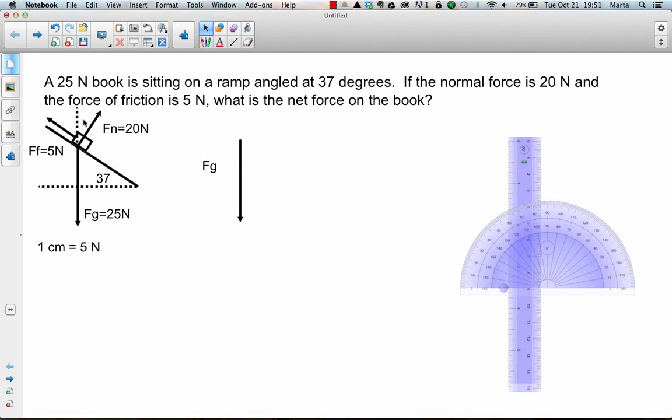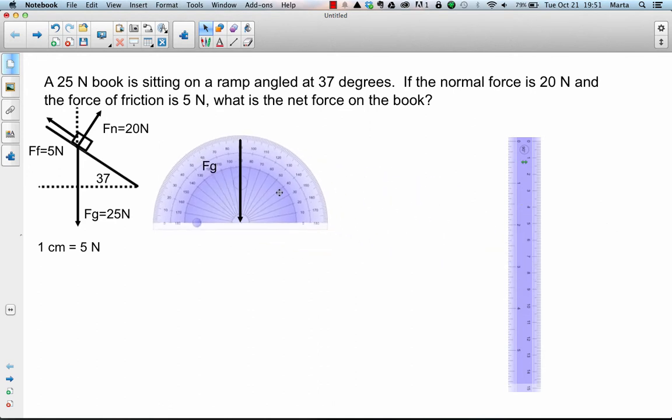it turns out that this angle right here is the same as the angle at the bottom of the ramp, 37 degrees in this case. If you want to go through the geometry behind that, just let me know.